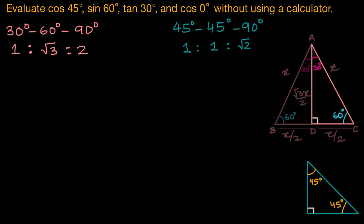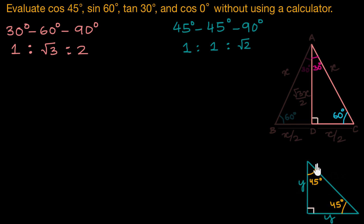Moving on to our 45-45-90 triangle — because this is an isosceles triangle, the sides opposite to the equal angles will also be equal. So if the length of one side is Y, the other side would also be Y. Using Pythagoras theorem, we can calculate the length of the hypotenuse to be √2·Y. So the ratio between these three sides comes out to be 1 : 1 : √2.